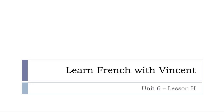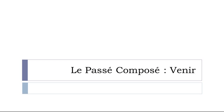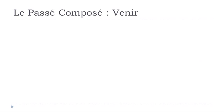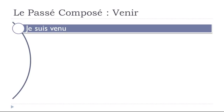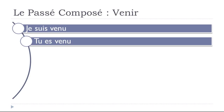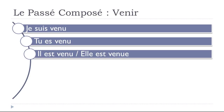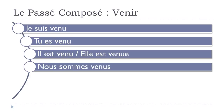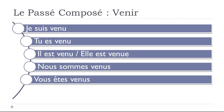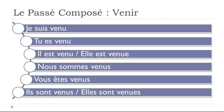Bonjour à tous and welcome to Learn French with Vincent. This is Unité 6, Leçon H — le passé composé of venir — to come. It's a bit tricky: je suis venu, tu es venu, il est venu, elle est venue, nous sommes venus, vous êtes venus, ils sont venus, elles sont venues.